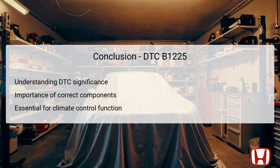In conclusion, understanding DTC B1225, which indicates an open circuit in the in-car temperature sensor, is crucial for maintaining the performance of the Honda Accord's climate control system. This DTC highlights not only the importance of the temperature sensor, but also the significance of the wires and connections that facilitate communication between components. Correct diagnosis and repair are essential to ensure that the climate control system operates optimally, providing accurate temperature regulation for driver and passenger comfort.